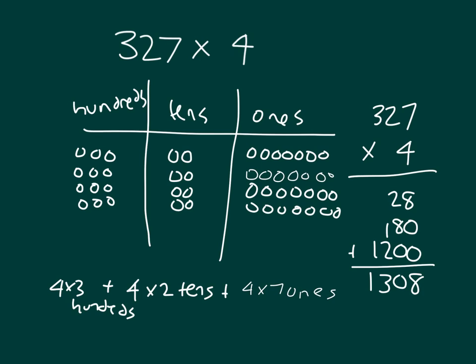Within the place value chart, I'm also going to show you the regroupings. There are seven ones here, and we count up to ten, then seven more up to ten — one left over. So that gives us eight ones in the ones place. We regrouped two sets of ten.